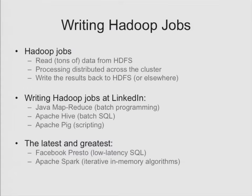There are a couple of hot trends happening in Hadoop land. One is the idea of interactive speed SQL. With a system like Presto from Facebook, you write a SQL script and it may process terabytes of data but return a result in just a few seconds. If you're interested in learning Hadoop, the hot thing right now is Apache Spark. The idea is to load as much of your data as you can into RAM, pin it there, and keep processing your data while it's in RAM before writing back to HDFS. If you're looking for a new Hadoop job, learn Spark — it's the hot thing to have on your resume.